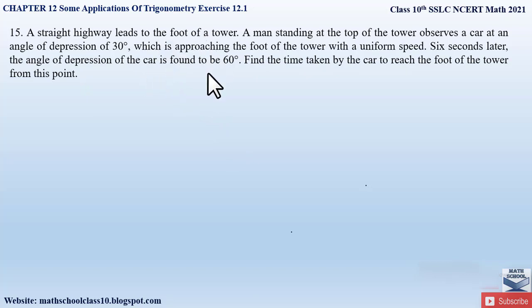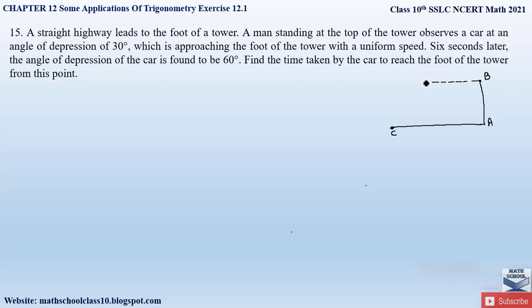The question is a little tricky, so let us understand it line by line and draw the figure first. A straight highway leads to the foot of a tower — let us draw a straight highway and name this tower as AB. There is a man standing on the top of this tower at point B. He observes a car at an angle of depression of 30 degrees, so let us take a point C where the car is. We draw the horizontal line first to draw the angle of depression from point B to the car at C, which is 30 degrees.